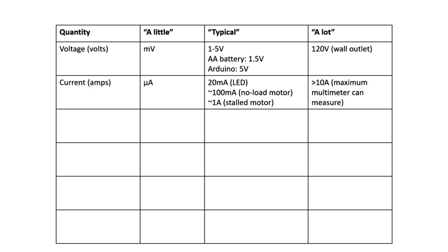For current, this is where the prefixes start to shift around, because it turns out that an amp is actually pretty big. Your multimeter can't measure more than 10 amps of current. The most you would probably see — for example, for your robot — is a single stalled motor getting up pretty close to an amp. With two motors, you might be talking about a few amps of maximum current draw. But smaller things are in the milliamp range: tens of milliamps for an LED, maybe closer to 100 milliamps for a motor with no load. So when you're measuring current, you're usually talking in the milliamp range, not up in the amps.